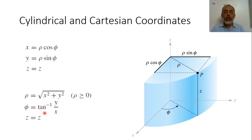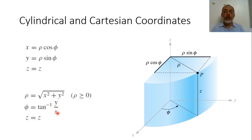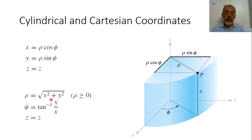We must take the proper quadrant when determining phi from arctan(y/x). If both y and x are positive, it is in the first quadrant. If both are negative, it is in the third quadrant. If y is negative and x is positive, it is the fourth quadrant. If x is negative and y is positive, it is the second quadrant. Finally, z equals z when converting from Cartesian to cylindrical.